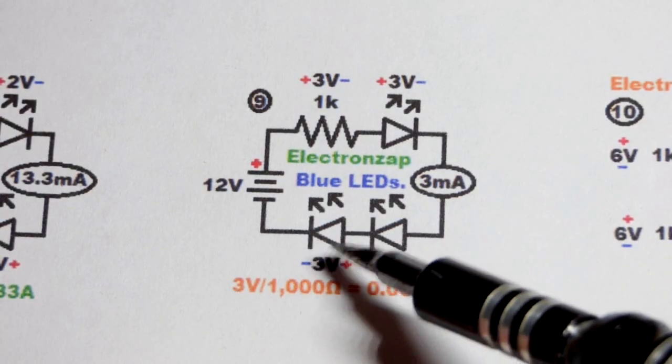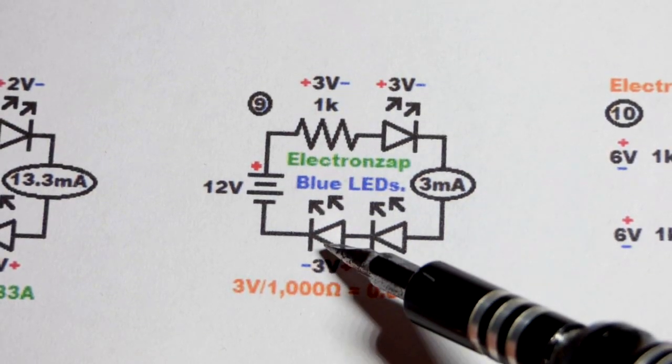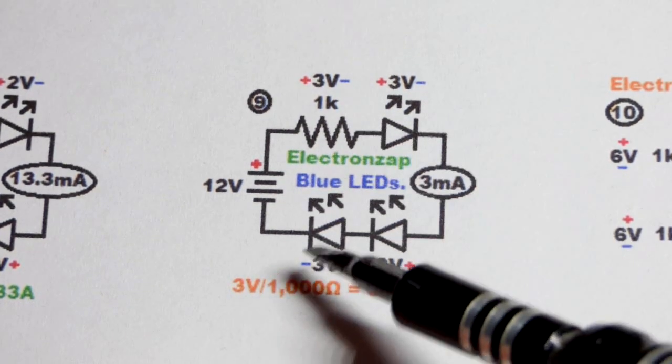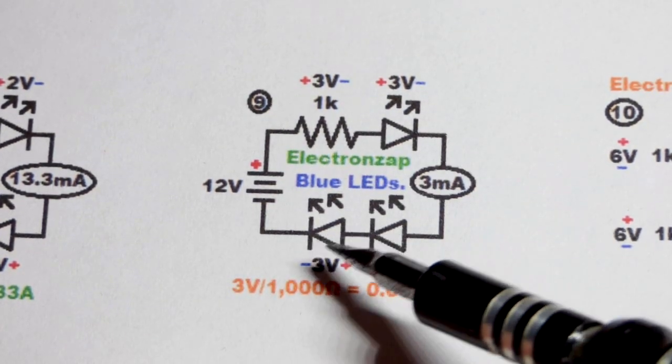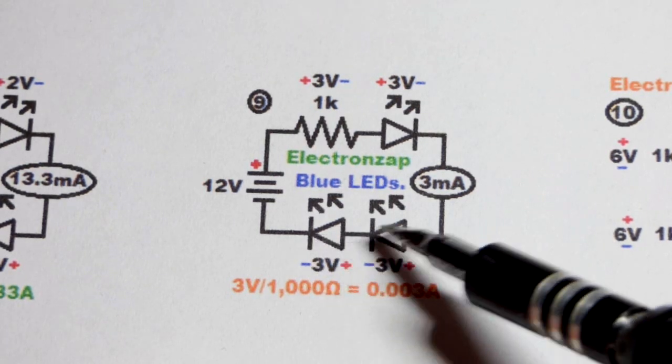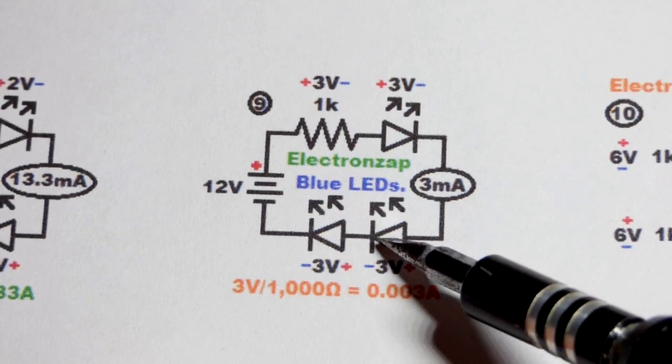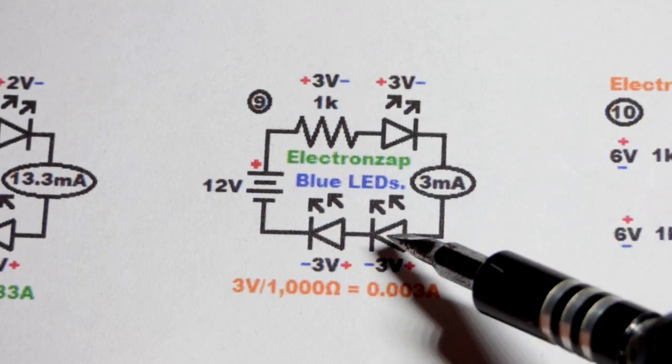So now in this video our goal is to light at least one blue LED with 12 volts. That's a lot for a resistor to handle, we looked at that in an earlier video. But the diode drops of each LED, blue LEDs, they drop about three volts and they add up when you stack them in series like this.